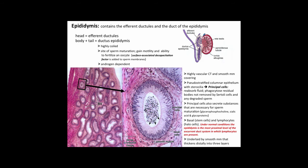The epididymis has highly vascular connective tissue and smooth muscle covering it, with pseudostratified columnar epithelium with stereocilia. The principal cells reabsorb fluid, phagocytize residual bodies not removed by Sertoli cells, phagocytize degraded sperm, and secrete substances necessary for sperm maturation. Basal stem cells are present and some lymphocytes may be associated. Under normal conditions, the epididymis is the most proximal level of the excurrent duct system where lymphocytes might be present. The epithelium is underlaid by smooth muscle that thickens distally into three distinct layers.